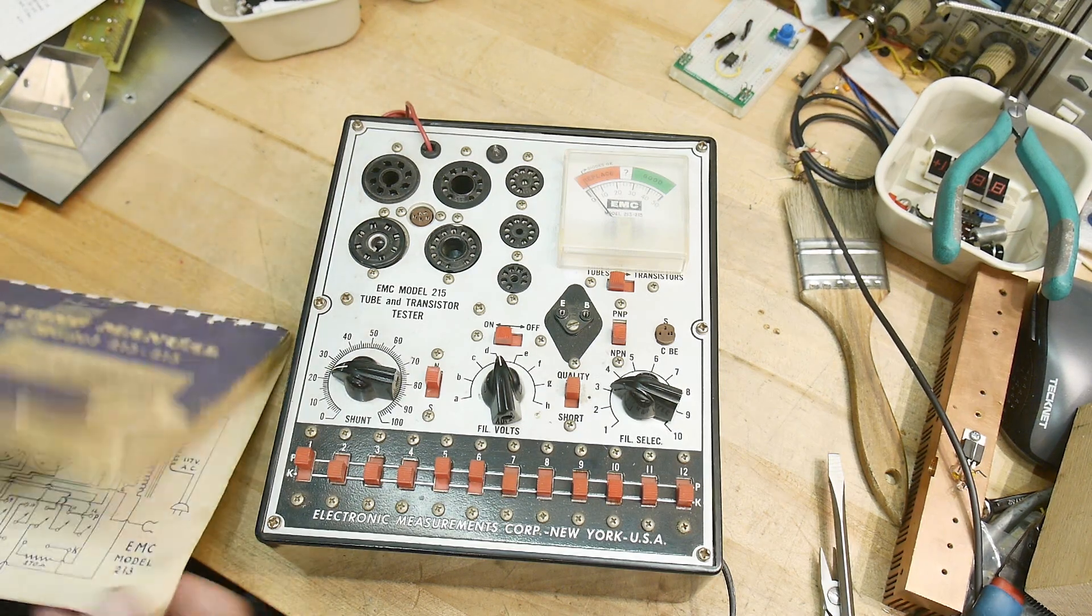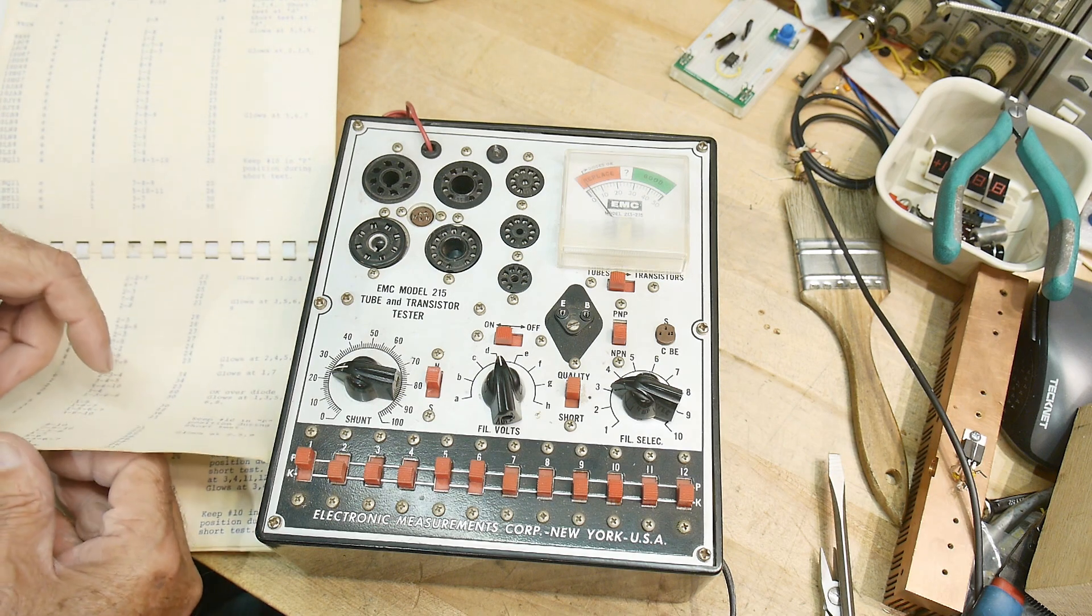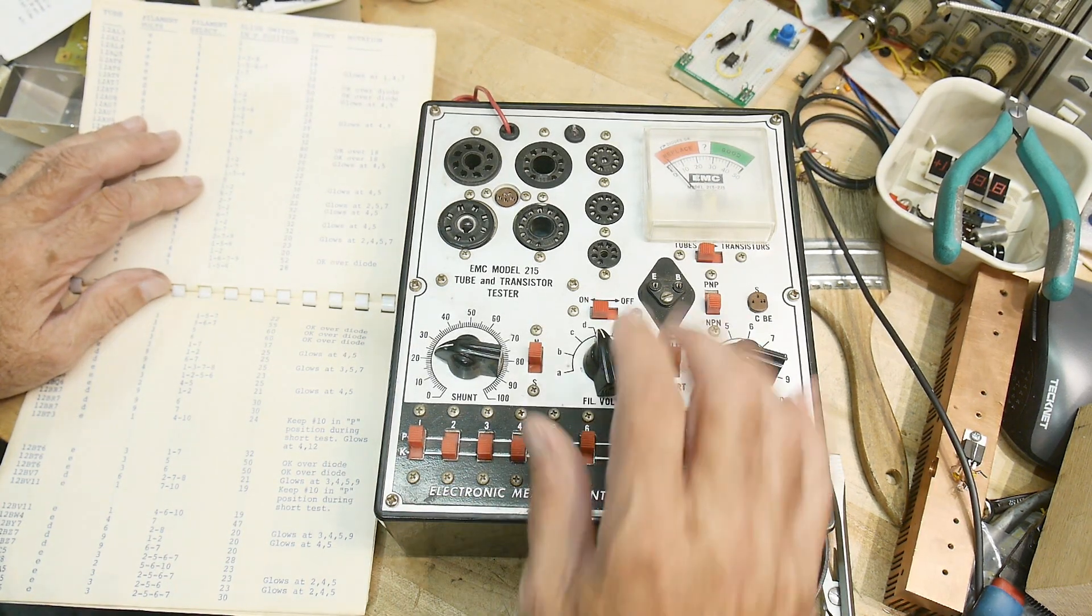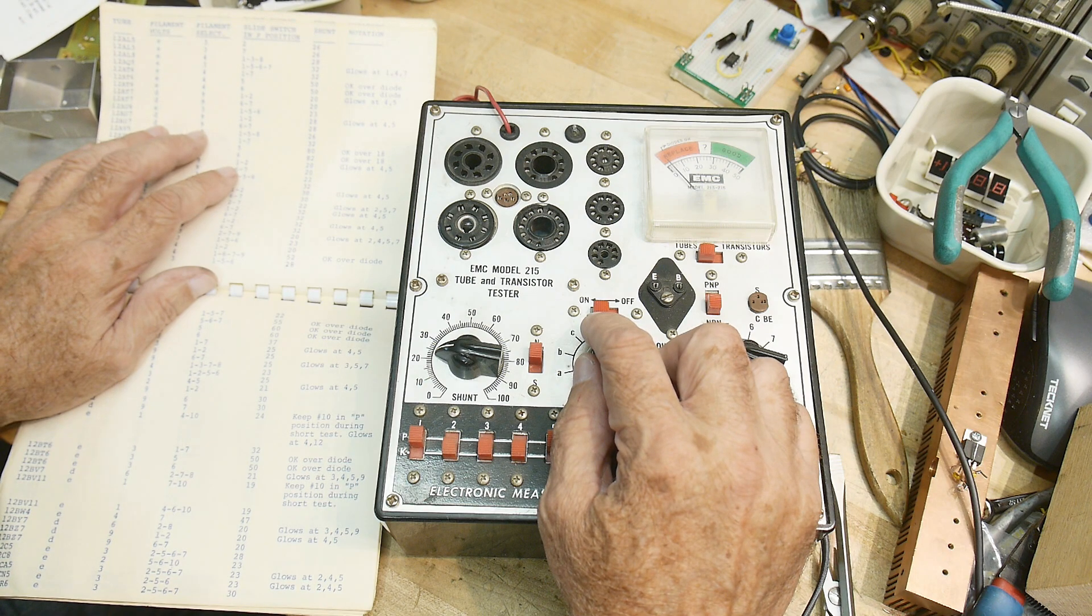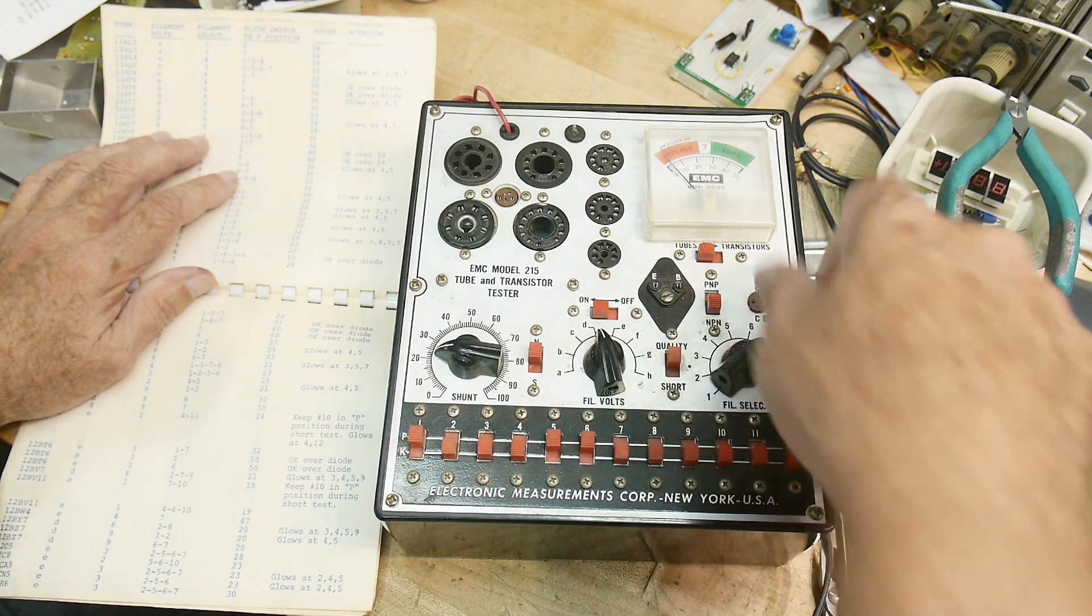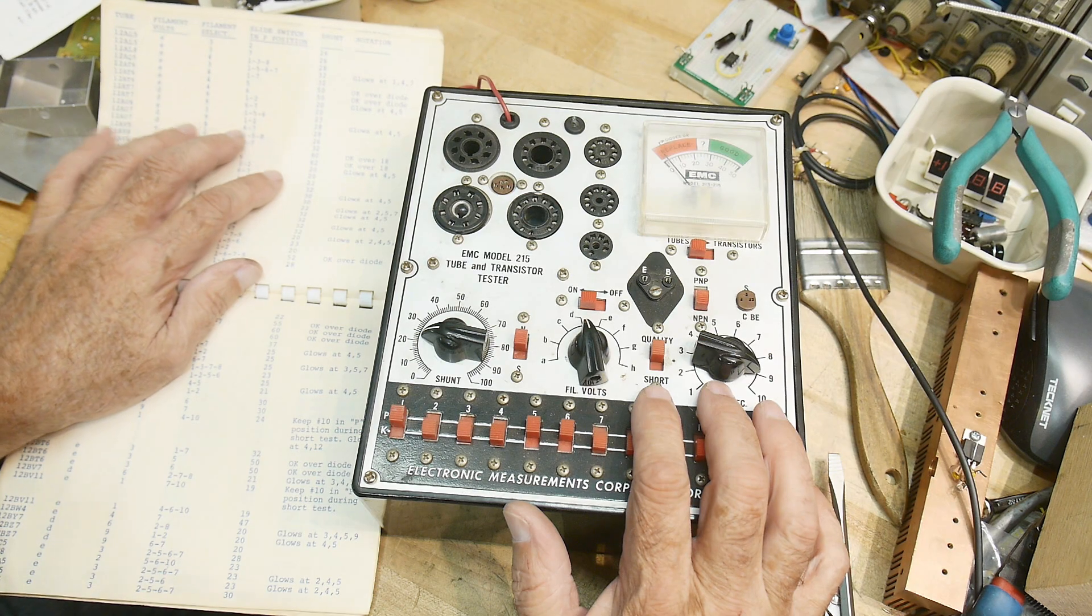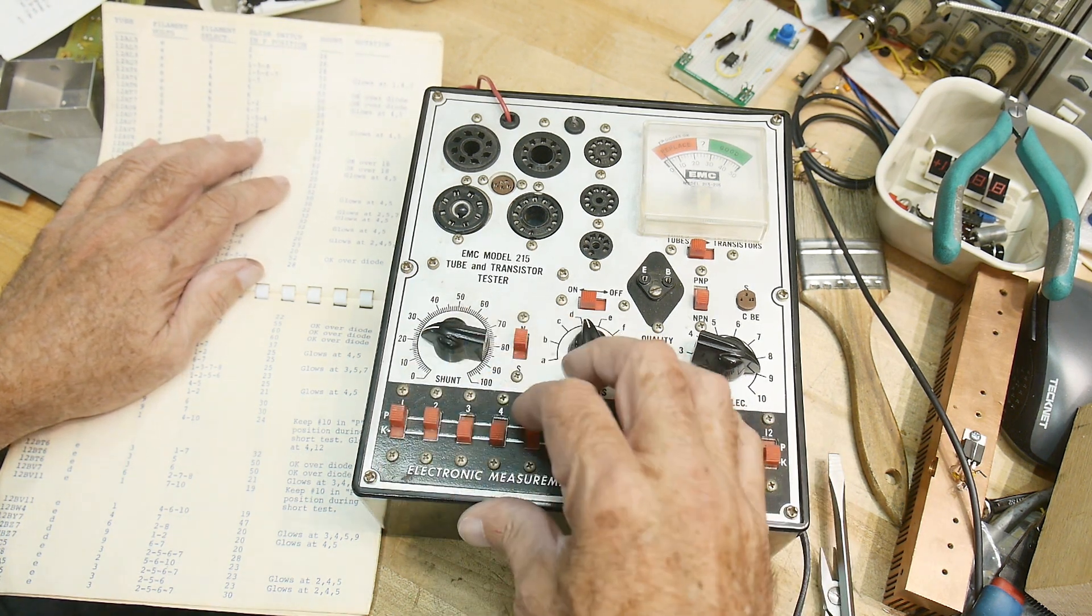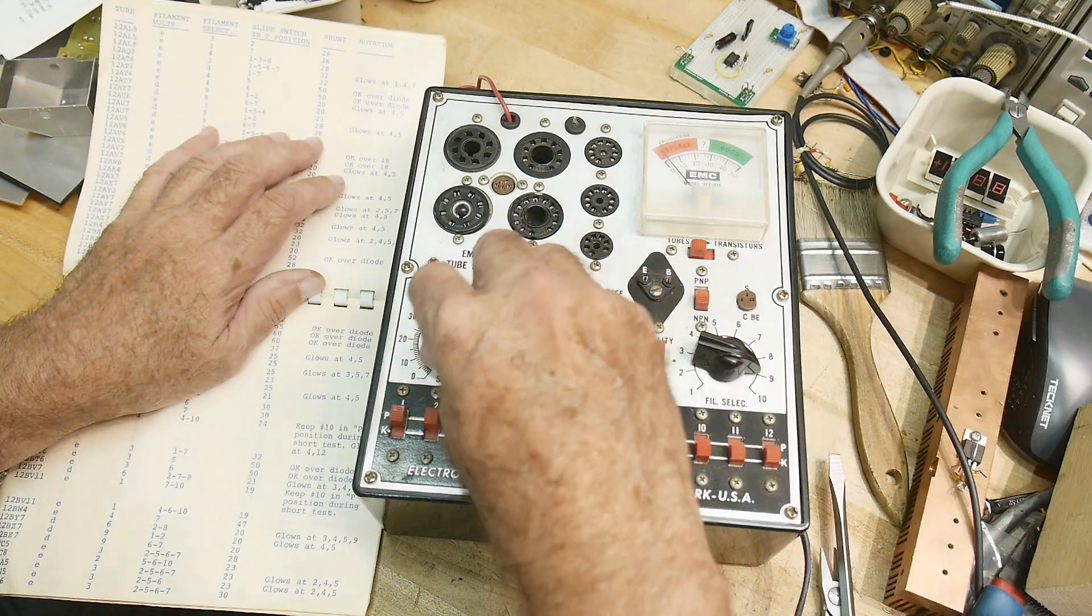So let's test a tube in it. Let's see. We had a 12AU7. All right. 12AU7. It says that we set the filament volts to D, filament select to nine. D9. And then slide seven, eight, D9, one and two. We go up into one and two and everything else is low, I guess. Shunt at 28. 28's about there.